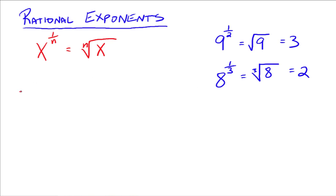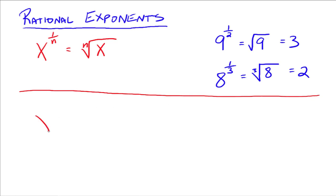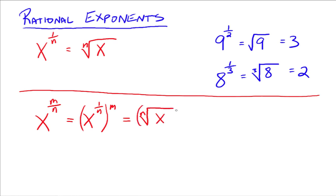A more general form would be x to the m over n. We can rewrite that as x to the 1 over n, all to the m power — because if you multiply the exponents together, you get back where you started. So x to the 1 over n is the nth root of x, and all of that is raised to the m power. So x to the m over n is the nth root of x, all raised to the m power.